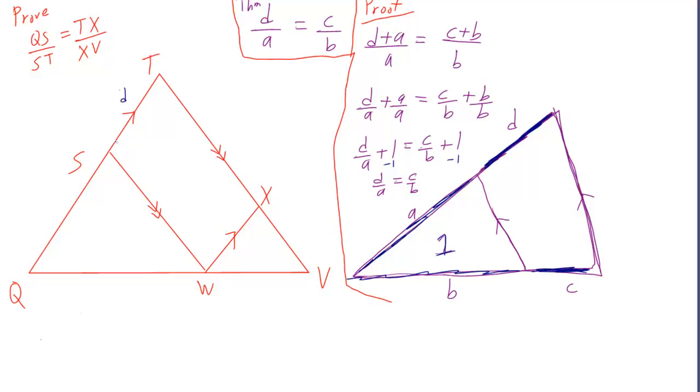Well, what's our d? It would be st. And what was our a? It would be qs. What was our c? Wv. And what was our b? qw.